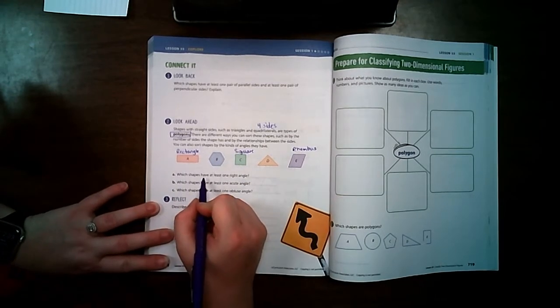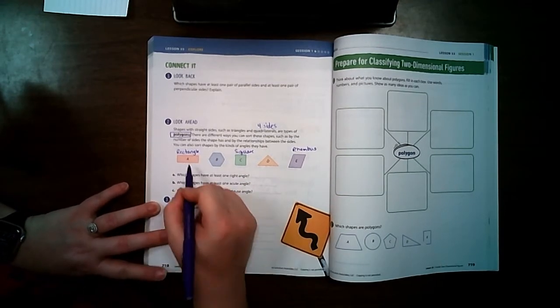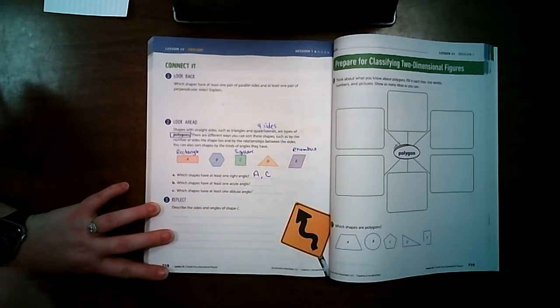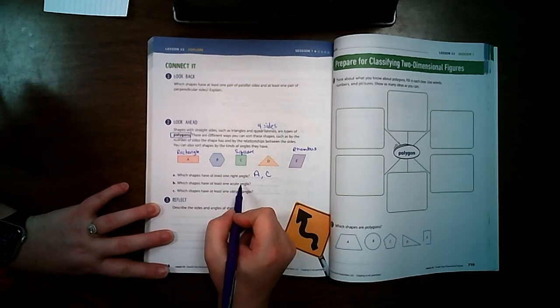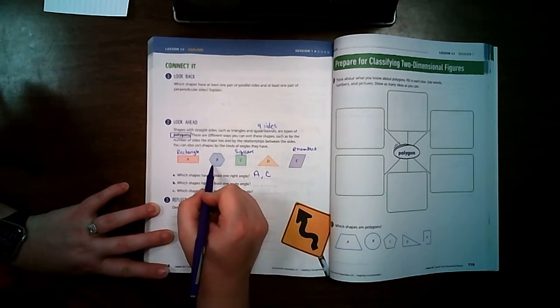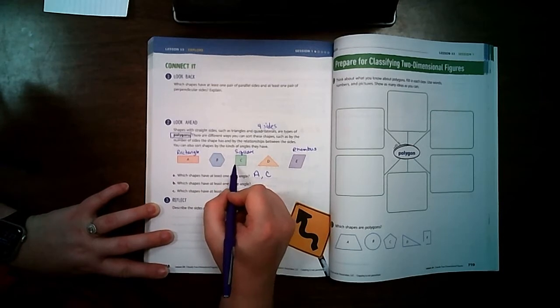So it says which shapes have at least one right angle? Well, A and C. Which shapes have at least one acute angle? These are all right. These are all obtuse. These are all right.